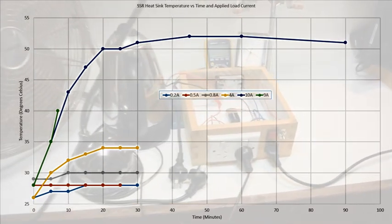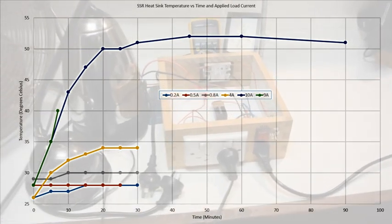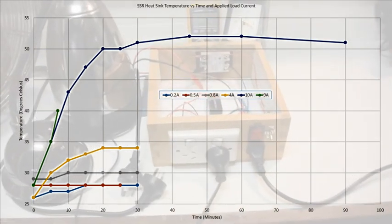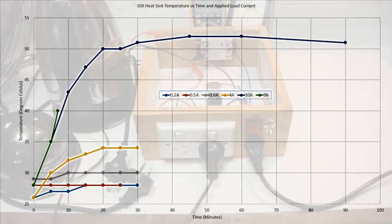And it appears that the fake FOTEC solid state relay is a potentially useful component, if specifically chosen to be significantly derated for the use case. In this example, the 40 amp version only been used for 10 amps.